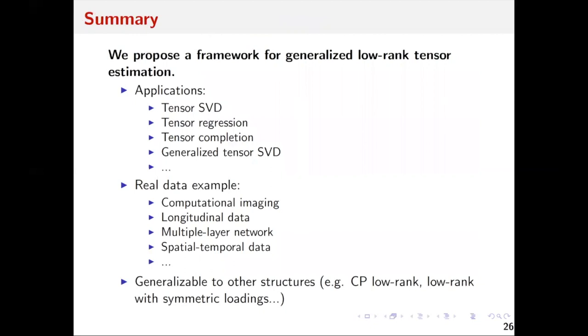Let's have a quick summary. In this talk we proposed a general framework for generalized low-rank tensor estimation with tractable optimization performance and minimax optimal statistical performance. It has many applications and covers many real data examples. In addition to low rank, which was the focus today, this idea can be generalized to other structures such as CP low-rank or low-rank matrices with symmetric loading structures. That's all I want to say. Thank you very much for your attention.